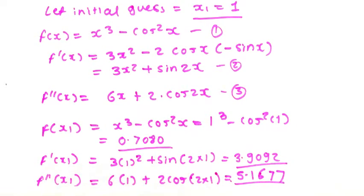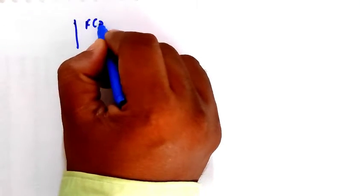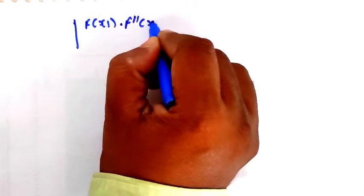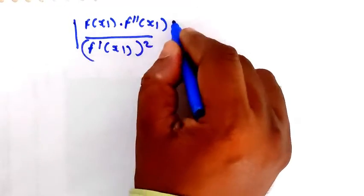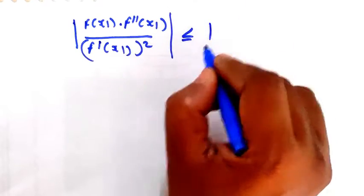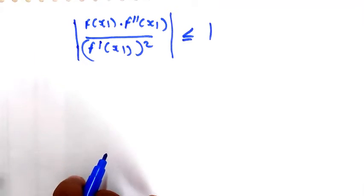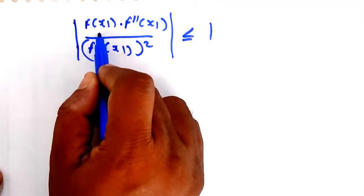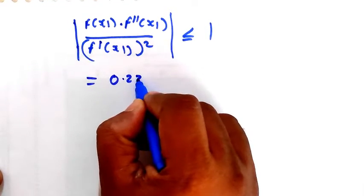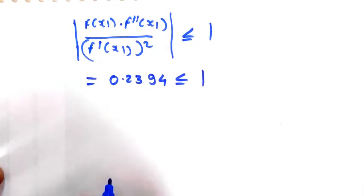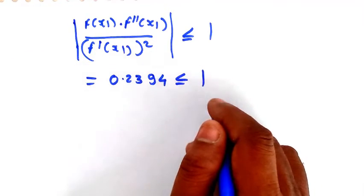Next step is to check whether the initial guess is correct. The convergence condition formula is: |f(x₁) × f''(x₁) / [f'(x₁)]²| ≤ 1. Putting in the values gives 0.2394, which is less than 1. So our initial guess x₁ = 1 is correct. We can directly go for iteration 1.